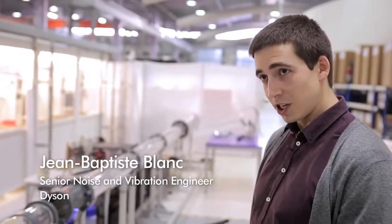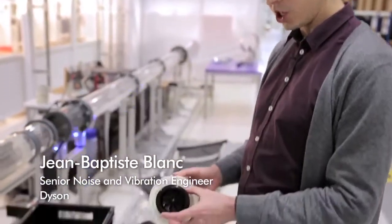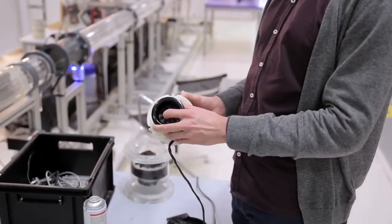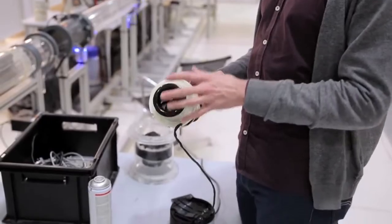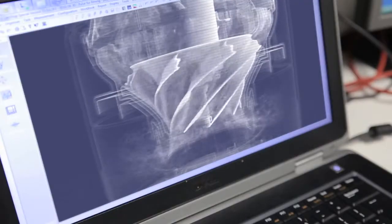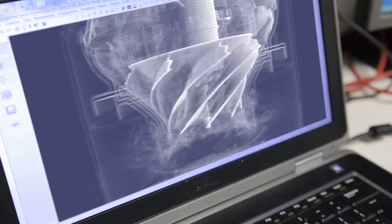This is the motor bucket that we designed to generate the primary airflow in a machine. It houses a brushless motor to which this impeller is connected. The impeller is the part which generates the airflow in the product when it is spun by the motor.